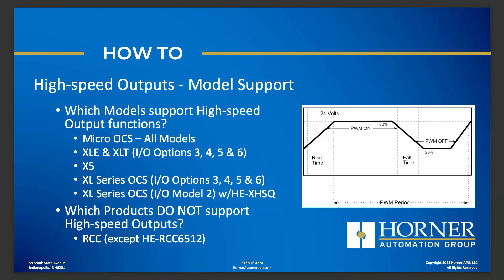Which Horner OCS products support high-speed outputs? We're typically talking about two high-speed outputs per OCS model. In the micro-OCS, all models including the relay output model support high-speed outputs, because even on the relay output version you've got a couple of solid-state outputs that can be used for these functions. The XLE and XLT support high-speed outputs built-in for models 3 through 6. The X5 supports high-speed outputs. The XL Series from the XL4 on up for models 3 through 6 support high-speed outputs built-in.